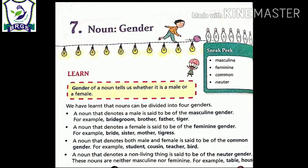Next is neuter gender. Neuter gender is a noun that denotes non-living things. For example: table, chair, house, bottle, chalk, book. These are neuter gender. So we have read four types of gender: masculine, feminine, common, and neuter.